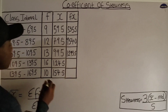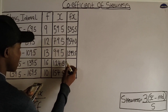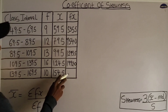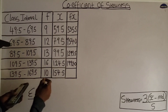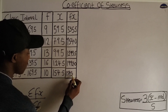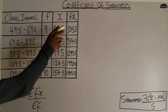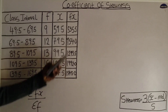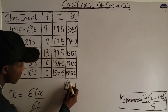For the fourth row: 16 multiplied by 124.5 equals 1992.0. For the fifth row: 10 multiplied by 154.5 equals 1545.0. I have now obtained all the fx values. The sum of this fx column — summation fx — is 6320.